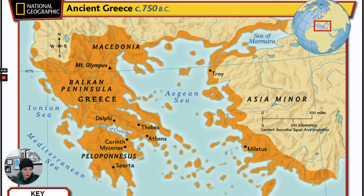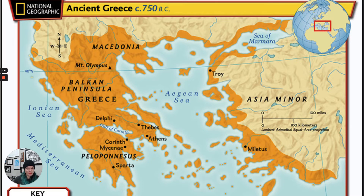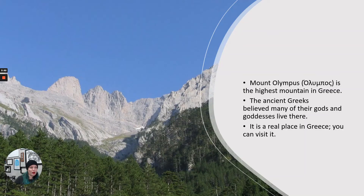Troy, you can see on your map — it's actually over in Turkey. We have Sparta, which is a pretty well-known place. The movie 300, which is based on a graphic novel, is about the Spartans. Athens is the capital of Greece. Mount Olympus is where the gods and goddesses live. So you could probably find these on a map — we're in Europe, next to the Aegean Sea, kind of on the Mediterranean.